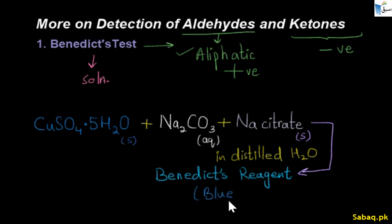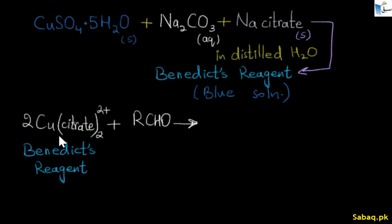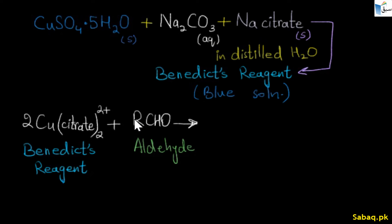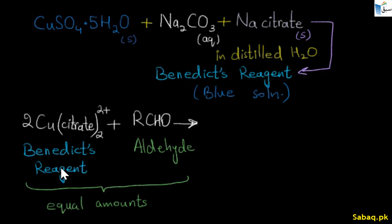We take the Benedict's reagent, which is a blue-colored copper citrate solution. Then we take an aldehyde sample — a carbon compound sample. Since aldehydes give a positive result, we take the aldehyde here. We took both solutions in equal amounts — the Benedict's solution and the aldehyde solution — and reacted them in a controlled temperature environment.